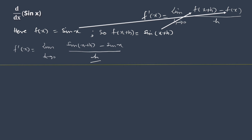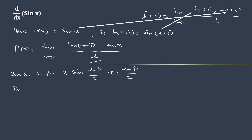Now we shall have to eliminate h from the denominator. For this, we shall convert the difference of two sines as a product, using the trigonometric identity: sine alpha minus sine beta equals 2 sine of one-half (alpha minus beta) cosine of one-half (alpha plus beta). Putting alpha equal to x plus h and beta equal to x, we can find the value of sine(x+h) minus sine(x) in product form.